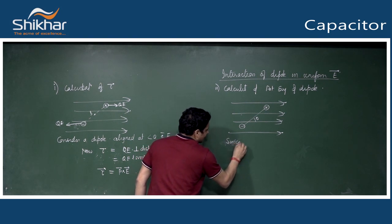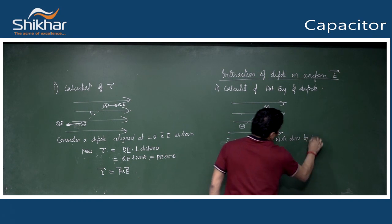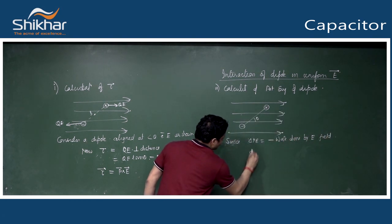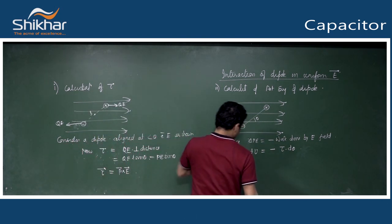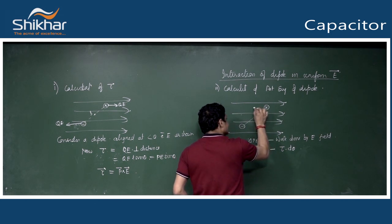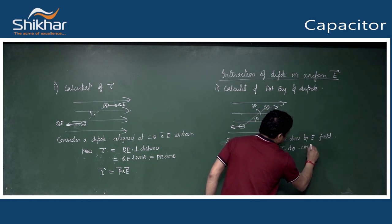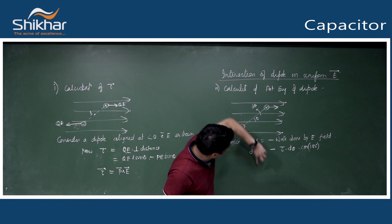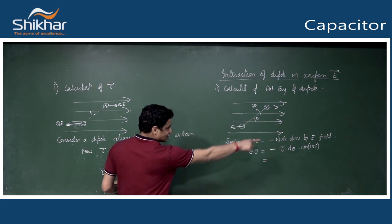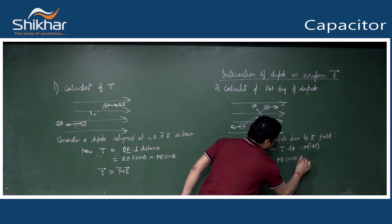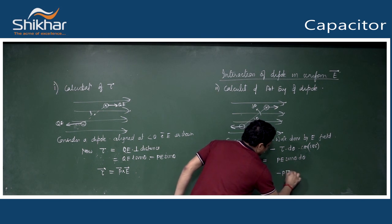Since change in potential energy equals negative of work done by electric field: dU = -dW = -torque·dθ·cos180°. The electric torque is in one direction and dθ increases in the opposite direction, so dU = torque·dθ = pE sinθ dθ. Integrating: U = -pE cosθ.